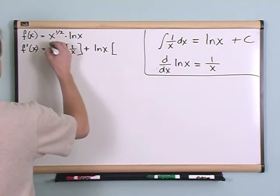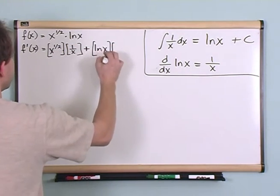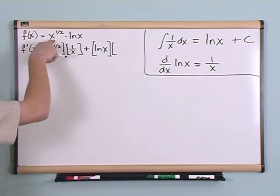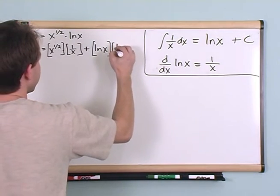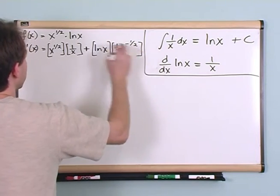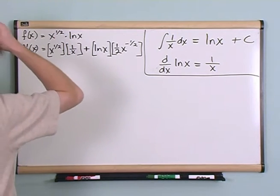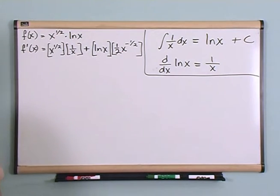I'm going to go ahead and put brackets around everything so that we're very clear. The second term times the derivative of the first term. We know how to do this. We've been doing this all day. This is just one-half x to the negative one-half. One-half comes down, x, and then you just subtract one off of the exponent here.